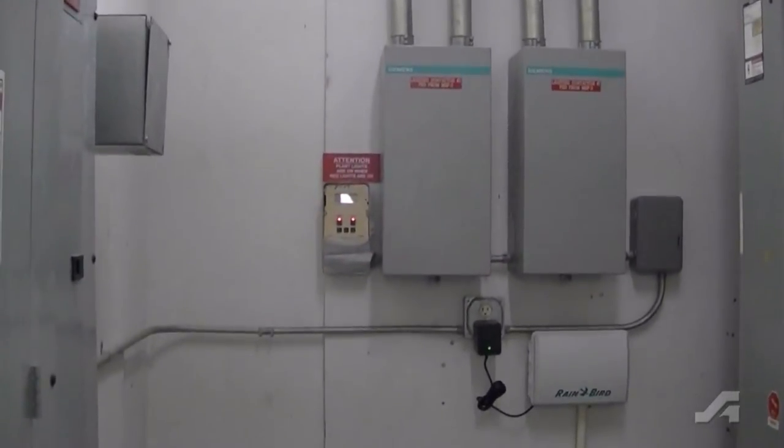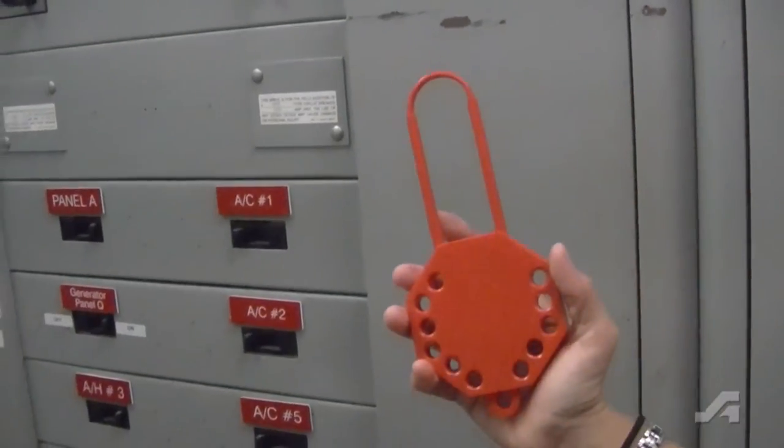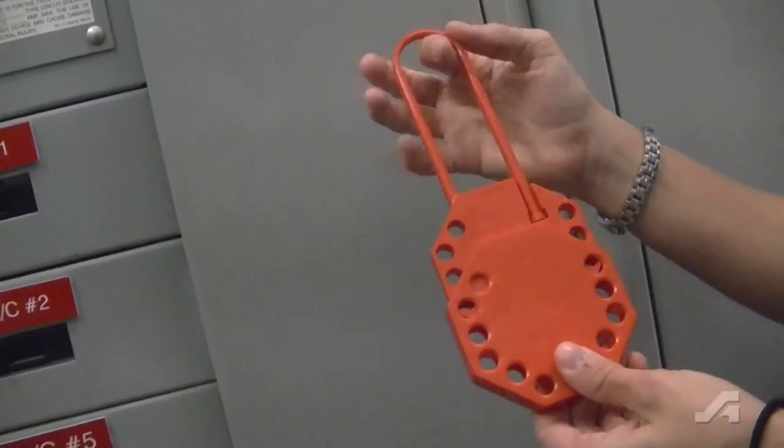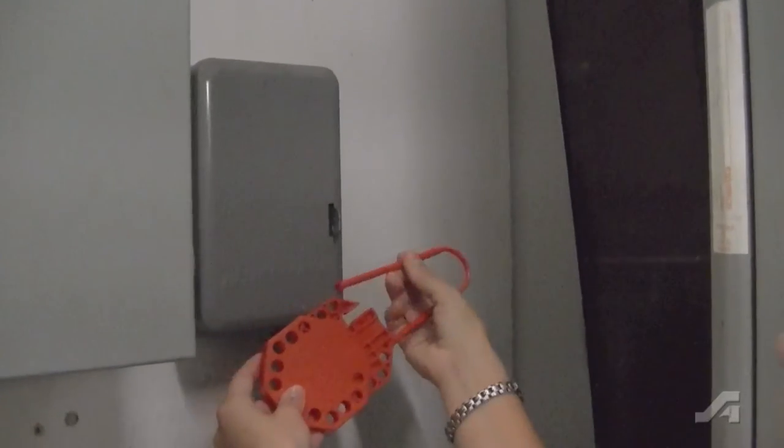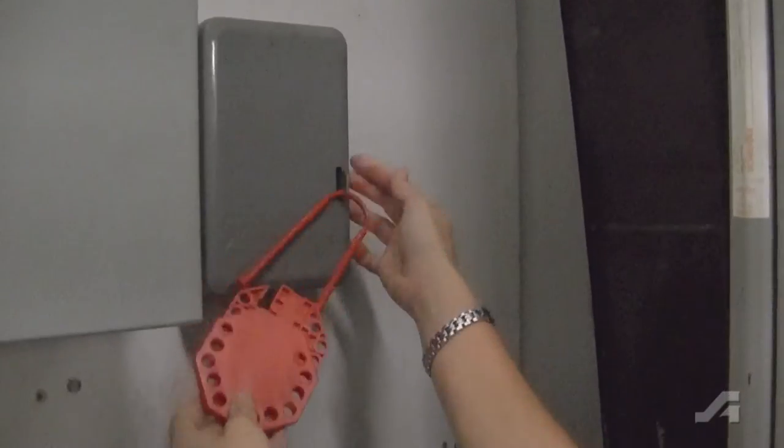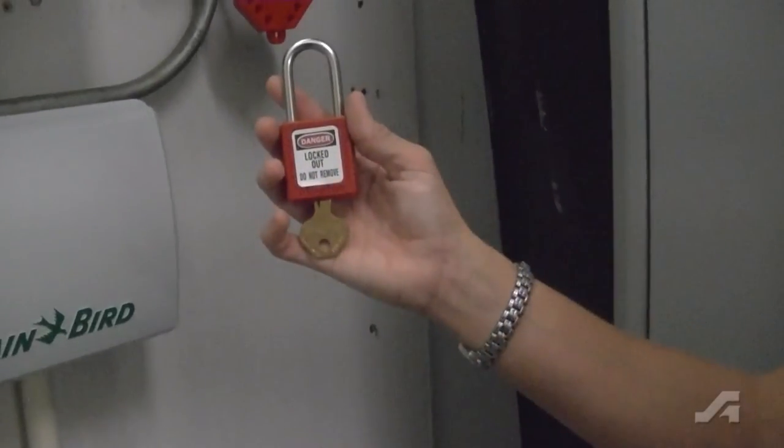Lock out equipment for up to 12 workers with the stop out group lock hasp. First, slide the inner body upward to release the locking loop, then insert the open end of the loop to lock out the device.